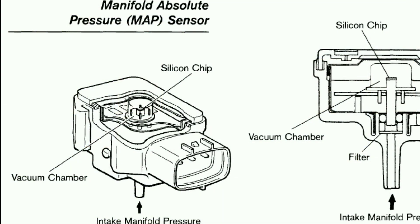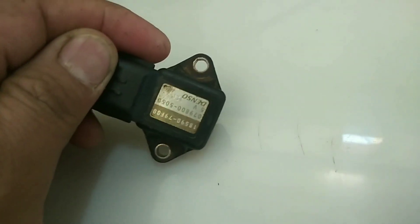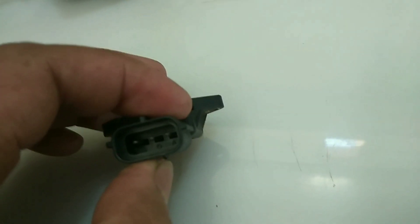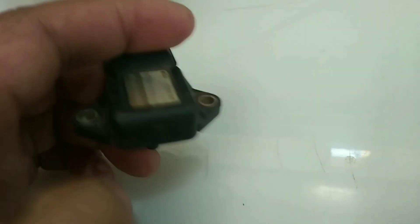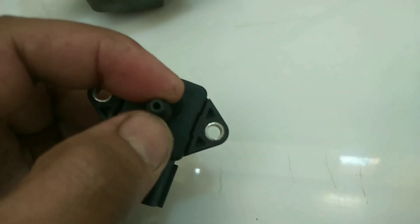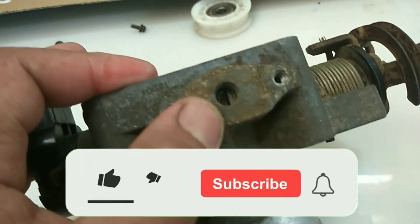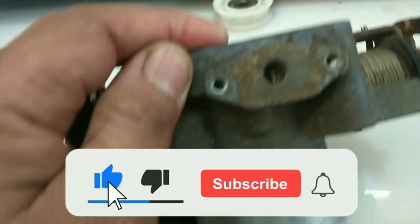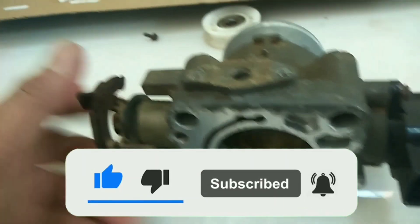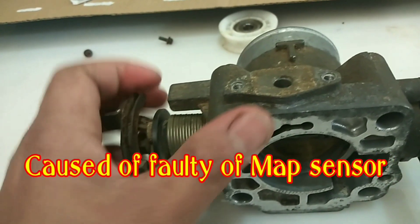If the MAP sensor goes bad, the ECM can't accurately calculate engine load, which means the air-fuel ratio will become either too rich (more fuel) or too lean (less fuel). If the ECM is reading low or no vacuum, it assumes the engine is at high load, so it dumps in more fuel and advances spark timing.